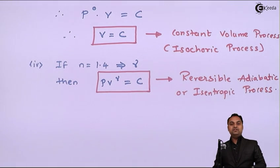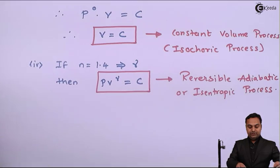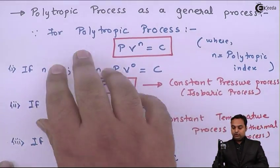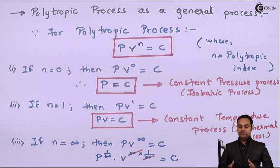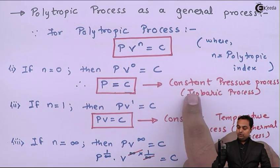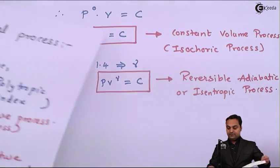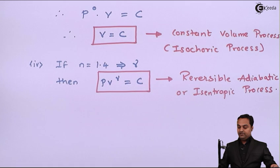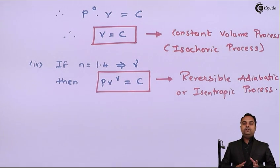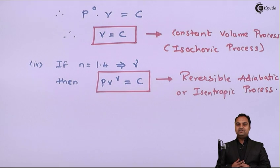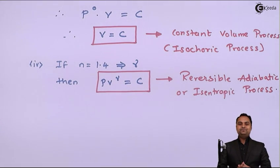So here we have seen that by taking the polytropic process as the general process, we can get all the processes out of it: constant pressure process, constant temperature process, constant volume process, and reversible adiabatic process. This means the polytropic process forms the basis for all the remaining processes used in the first law of thermodynamics for a closed system.